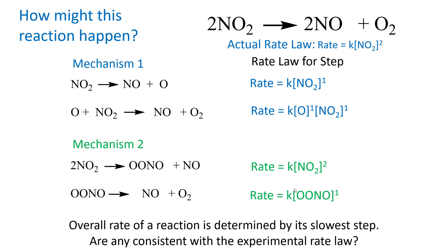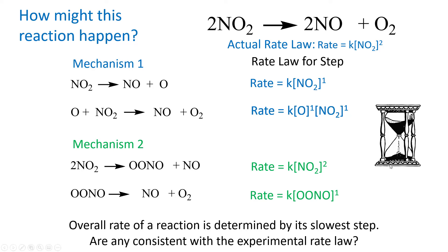The rate of the reaction is determined by the slowest step — like an hourglass, where the rate sand flows through is determined by how fast it can get through the smallest aperture. How fast it moves above or below that point doesn't matter; it's always the slowest step. Narrowing that hole slows the rate; opening it up speeds things up. The same is true for reactions.